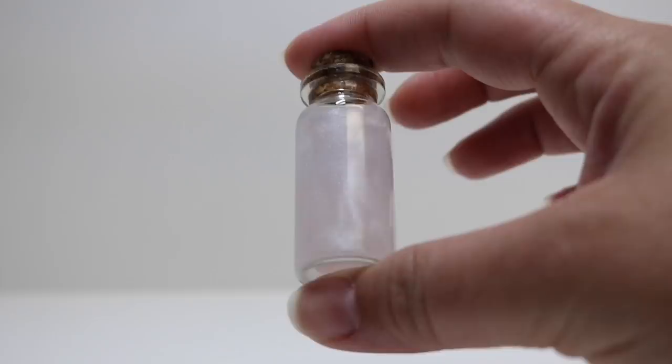The first thing I'm going to do is take my E6000 glue and we are going to glue the top of the cork on.